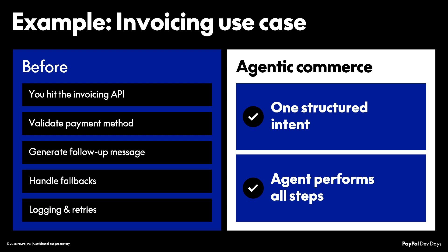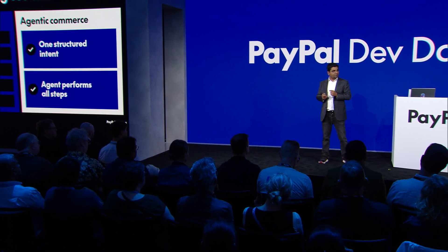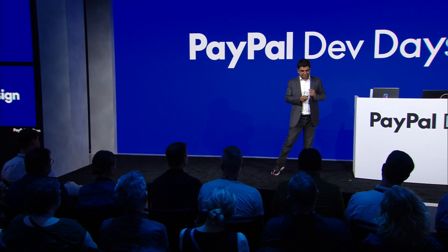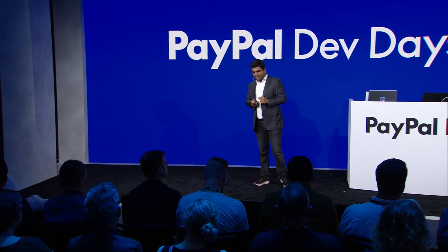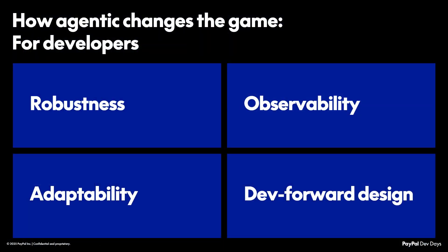The design principles have changed. This is what I want you to remember over the next two days as you're building applications, participating in the Hackathon, thinking about this agentic world. Your job is no longer to figure out various API calls. Think about MCP servers. Think about A2A protocols. Your role as a developer is fundamentally changing. MCP allows for robustness and a very forward-looking design pattern — one that is yet to be discovered. We are living it right now.